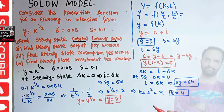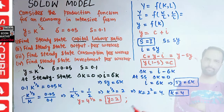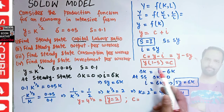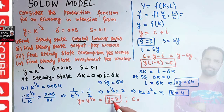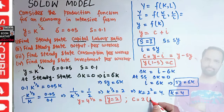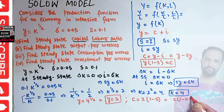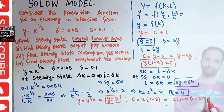Then we have to find the consumption per worker. We calculated that c equals y times (1 minus s). Output per worker y is 2, and s is 0.1, so c equals 2 times (1 minus 0.1) equals 2 times 0.9 equals 1.8. So our steady state consumption per worker is 1.8.